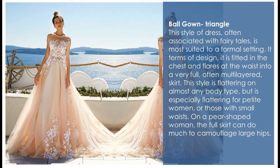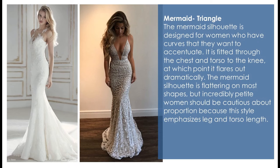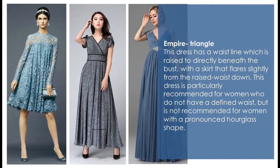The ball gown is also triangular — this style of dress is often associated with fairytales and is more suited to formal occasions. The mermaid silhouette is designed for women who have curves they want to accentuate; it is fitted through the chest and torso to the knee, at which point it flares out dramatically. The empire triangle dress has a waistline raised directly beneath the bust and flares slightly from the raised waist down. It is particularly recommended for women who do not have a defined waist, but not recommended for women with a pronounced hourglass shape.